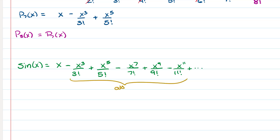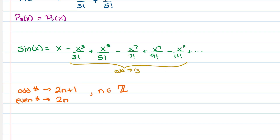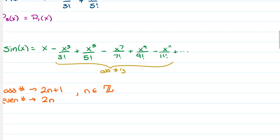Notice that all the powers are odd numbers. Any odd number can be represented by 2n + 1, and any even number by 2n, where n comes from the integers — whole numbers that can be negative, like …, -2, -1, 0, 1, 2, 3, …. If you plug any integer into 2n + 1 you get an odd number, and into 2n you get an even number.